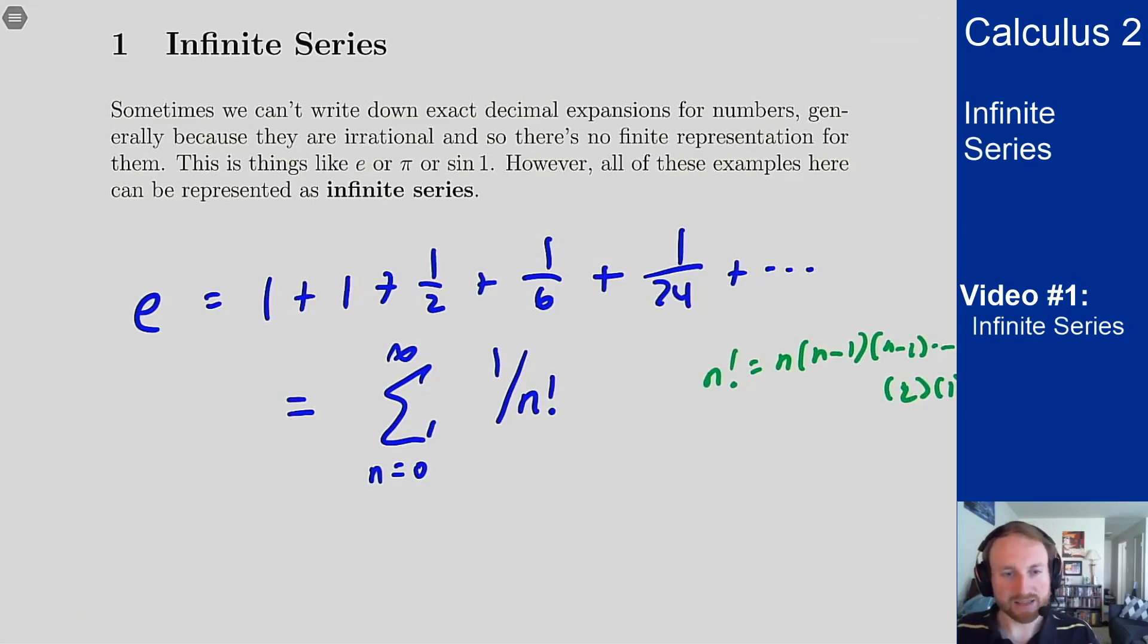But that's e. That is a series expansion of e, that number 2.718. I can write it in this way and I will get that exact number.